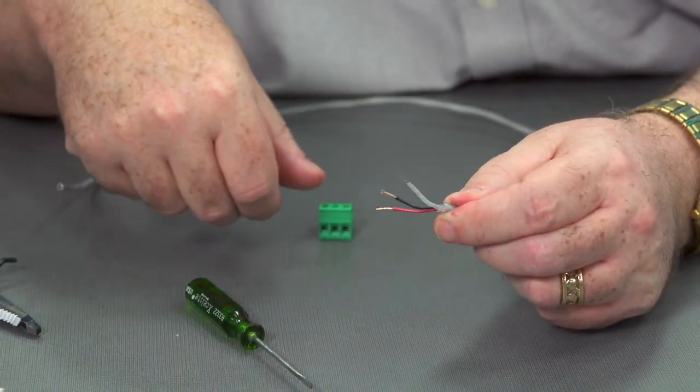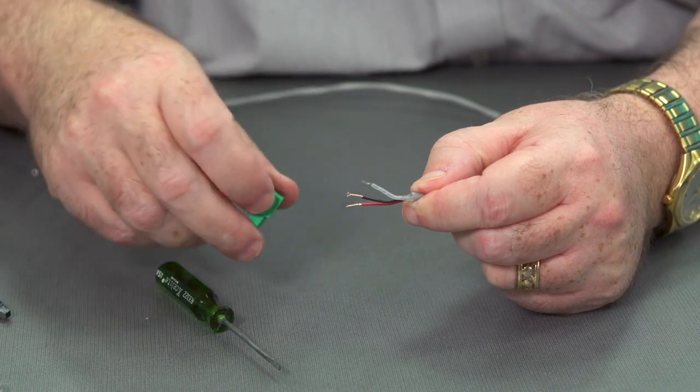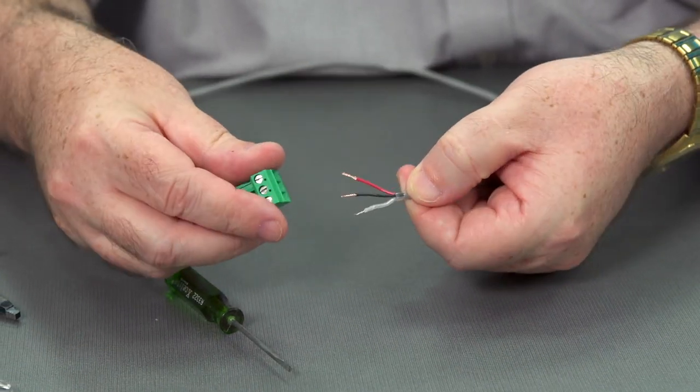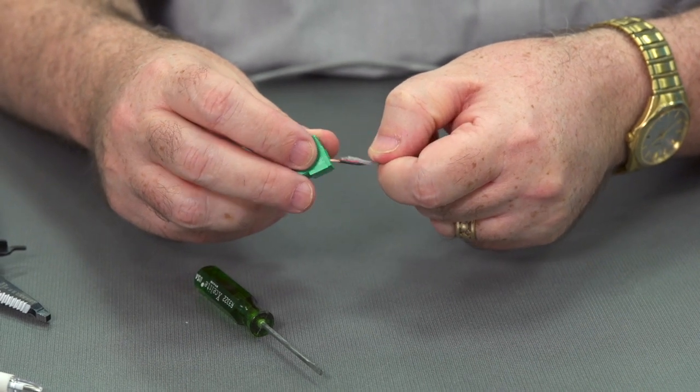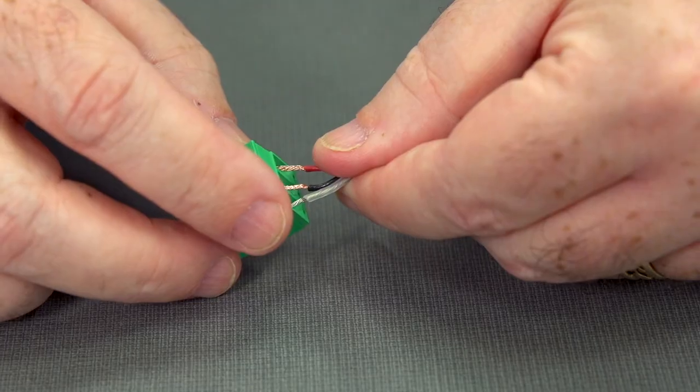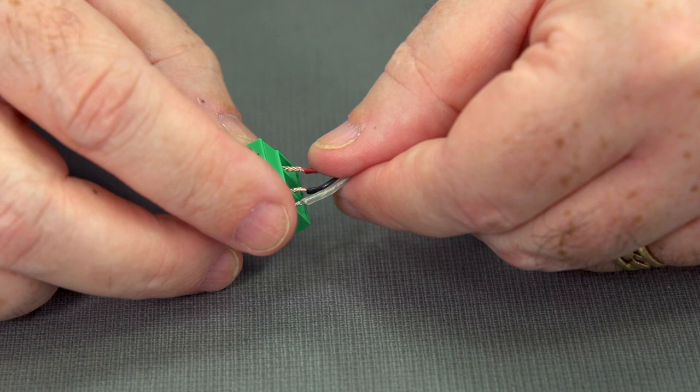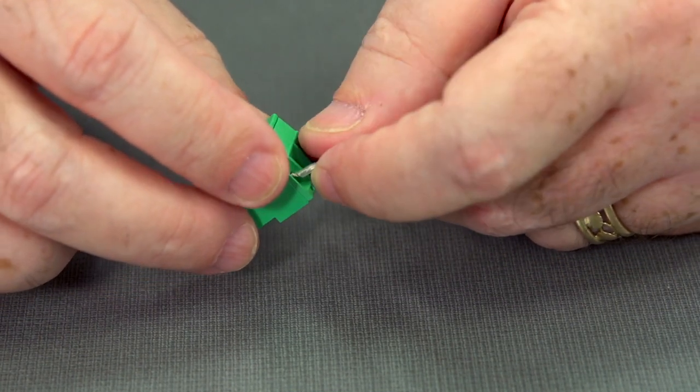And here we have our three wires and we're going to go ahead and put them inside the gates. Now, how do I know which wire goes in which gate? This is what's known as the pinout. You can usually find the instruction for which conductor goes in each gate in the equipment manual.